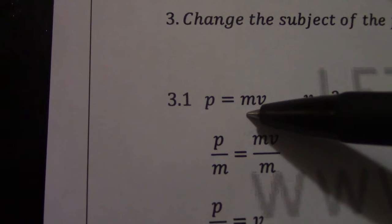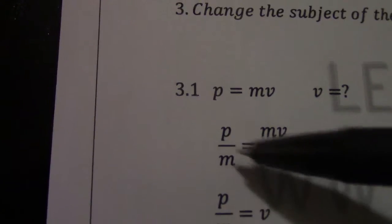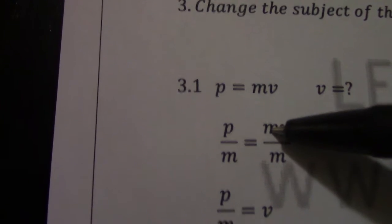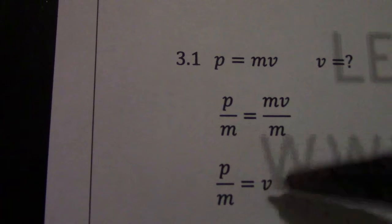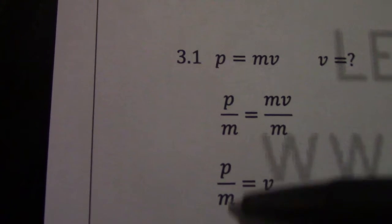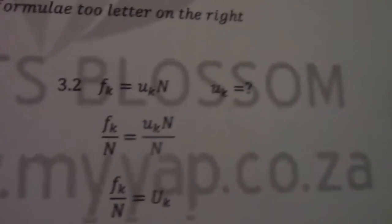I want v on its own so I have to get rid of m. So mv divided by m. What I do one side I have to do on the other side. There you should see m and m cancels and therefore I have v. V equals to p divided by m. I shouldn't say m and m cancels. Apparently it is releasing a new album.